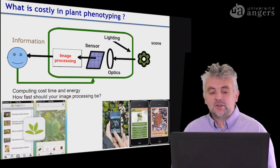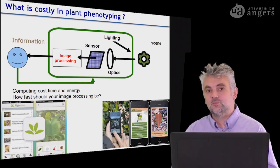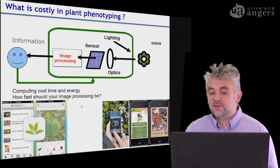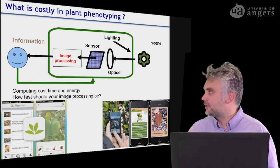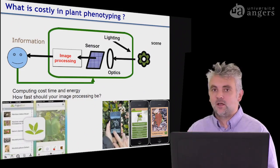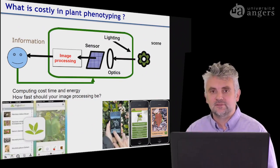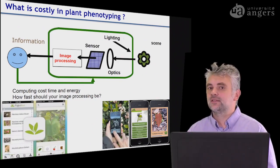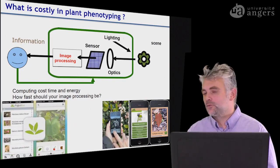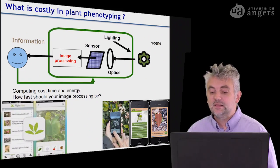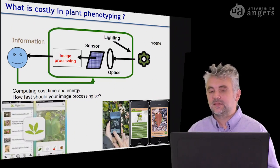Doing some computation costs time and energy, and you have to take this into account when you make choices. For example, with smartphones there already exist many applications that are really helpful for plant scientists — for instance, if you are interested in recognizing some species or detecting diseases on a leaf, some of these applications already do the job for you.